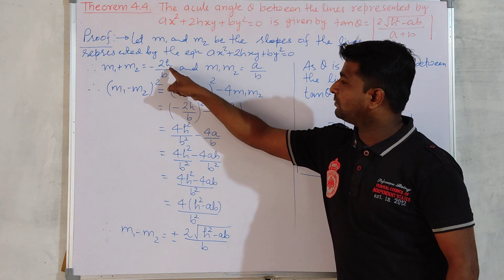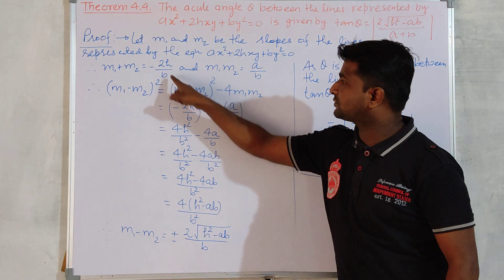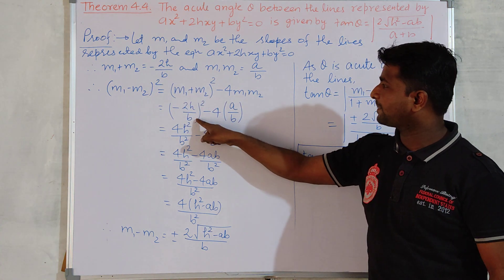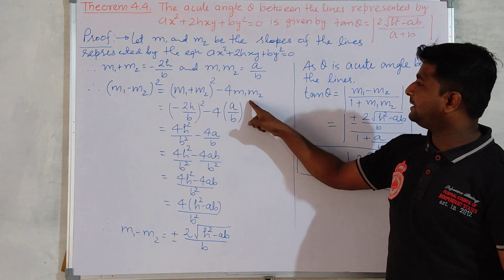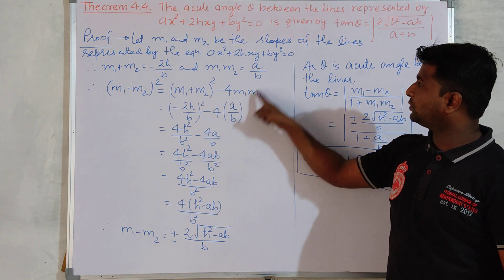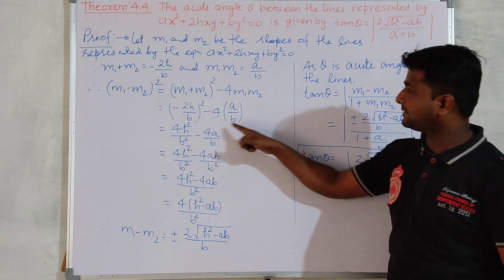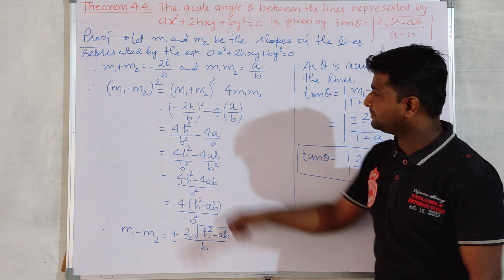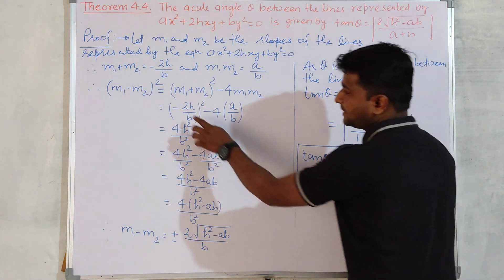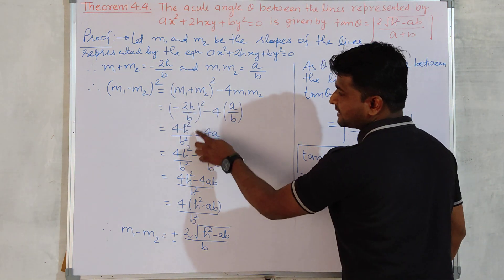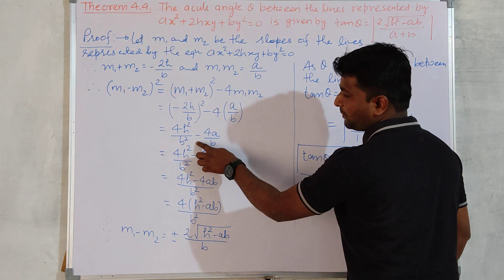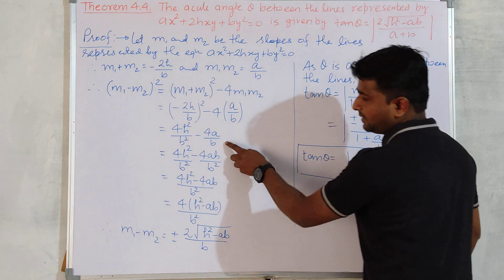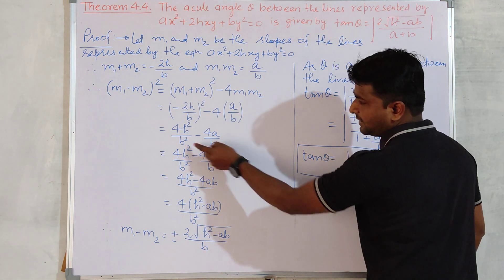Now we find m1−m2. Simplifying, we get 4h² upon b², and 4a upon b, working through the algebra with a common denominator of b².